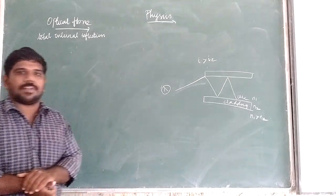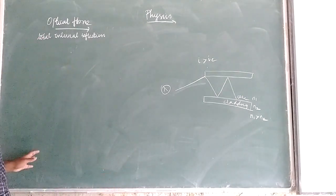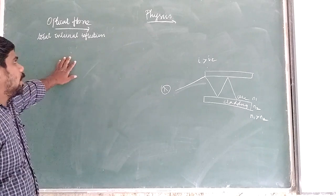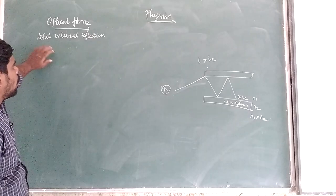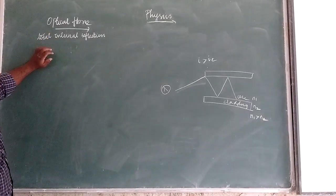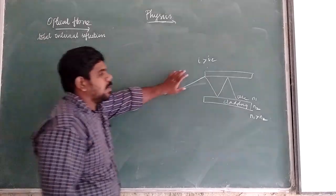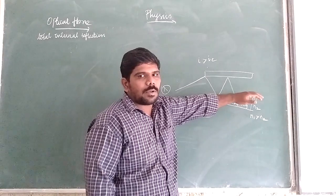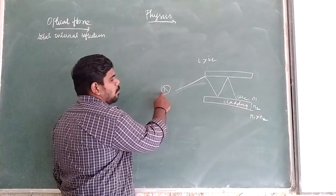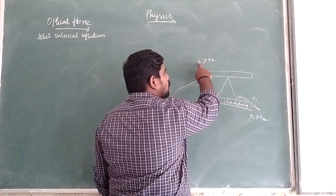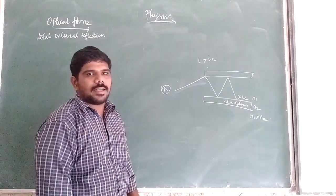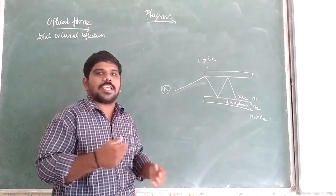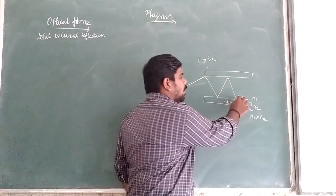To summarize: optical fiber is a tool which carries information in the form of light. The advance of the signal in optical fiber is possible due to total internal reflection. The inner part is the core, the outer part is the cladding, and the refractive index of the core is always greater than that of the cladding. The light signal is incident on the core-cladding interface at an angle greater than the critical angle, ensuring total internal reflection at every point.